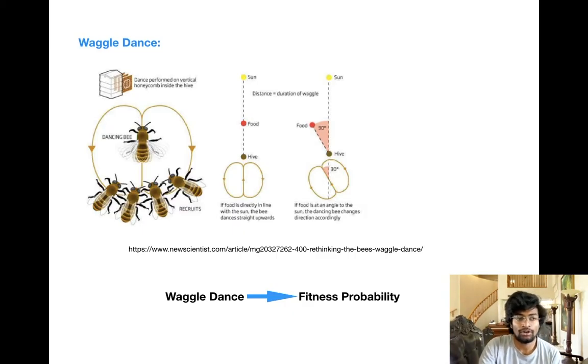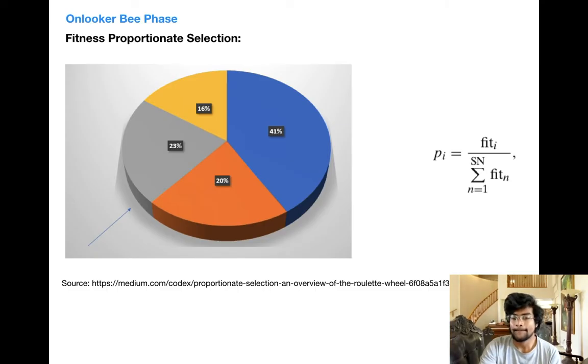Now moving on to the onlooker bee phase. The foraging bees have gone and explored possible solutions, and they come back to the hive and communicate with onlooker bees to recruit them and send them to these possible solutions. They do this by communicating with the waggle dance - a dance that bees do to notify onlooker bees about the possible locations of good food sources. Onlooker bees also go to the solutions based on - the onlooker bees select the solution that they want to go to proportionate to the fitness.